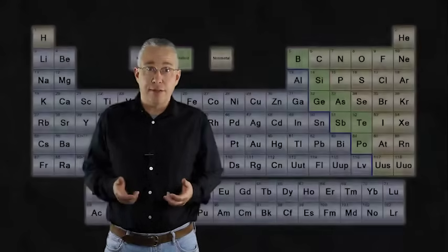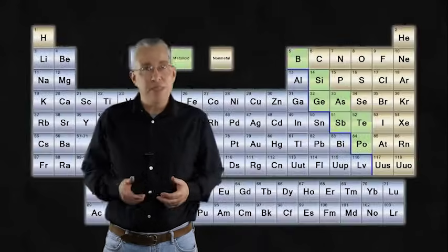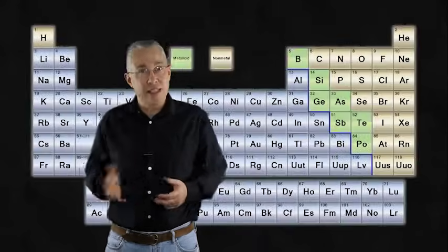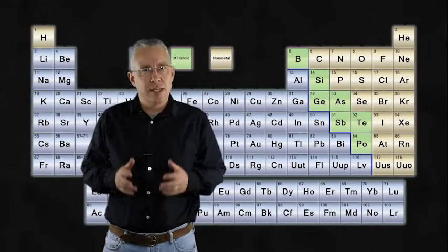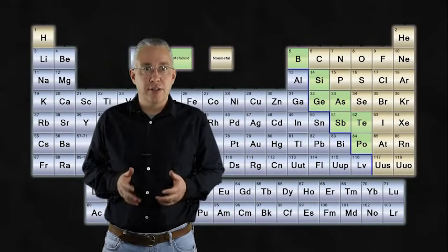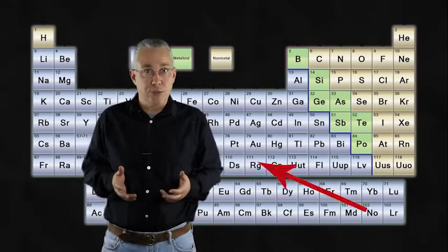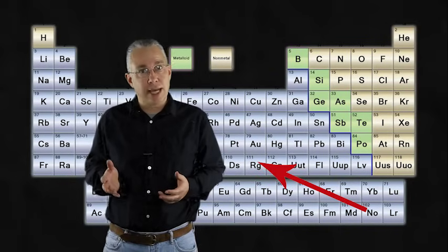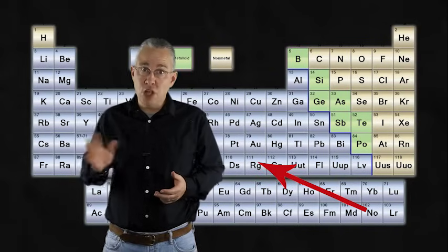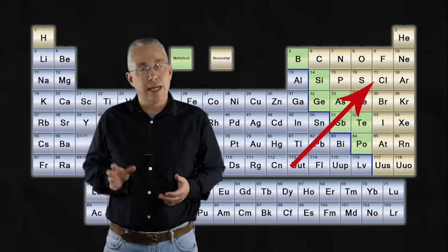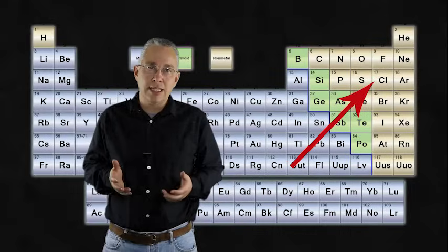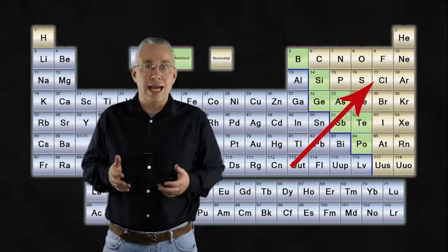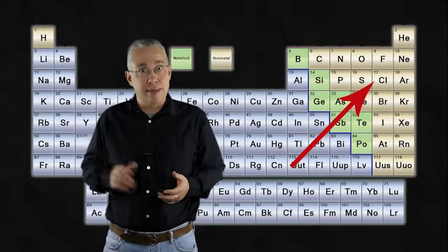When we think of substances on the periodic table, we generally have a tendency to divide them into one of three categories. The largest category, of course, are the metals. Then there are the non-metals, and there's a small number of elements on the periodic table which we classify as semi-metals.